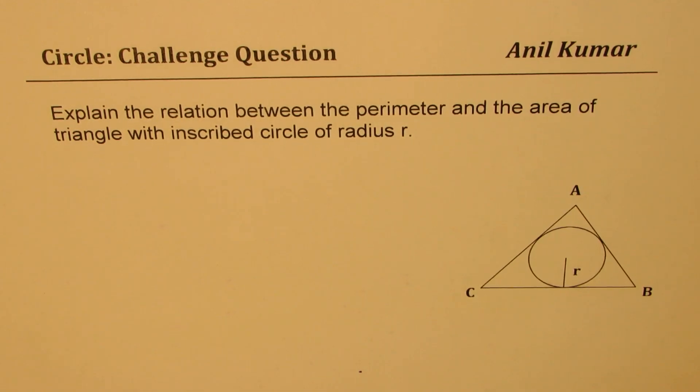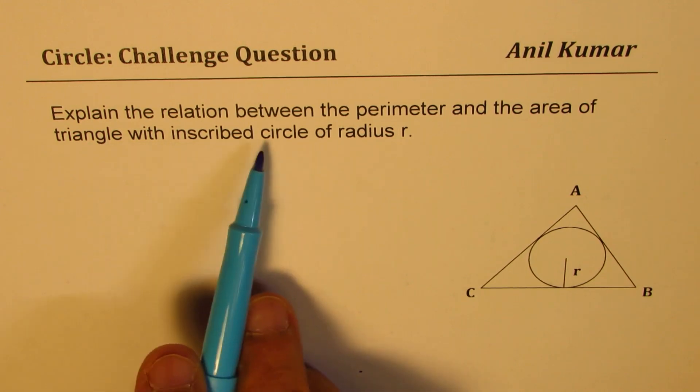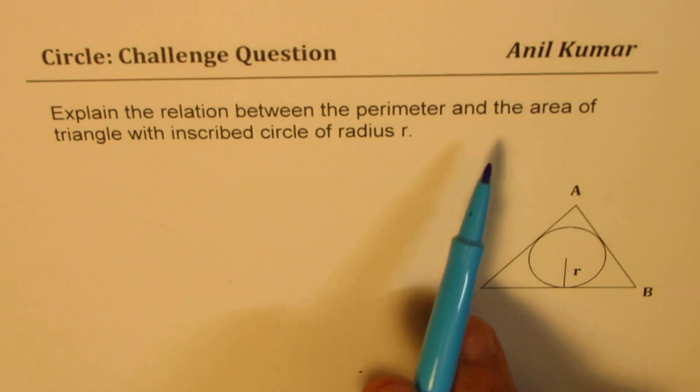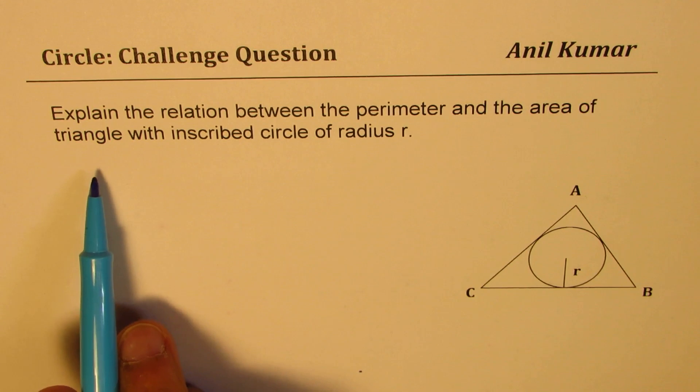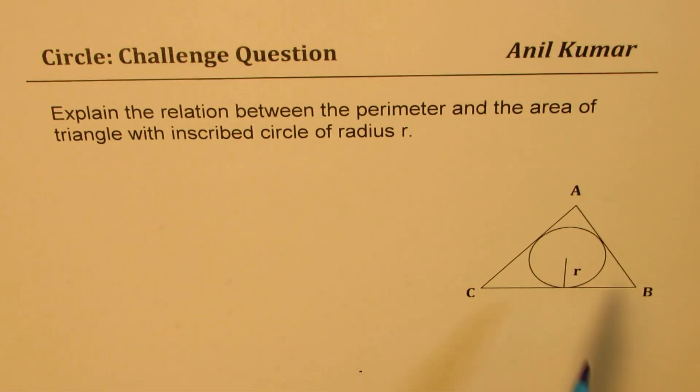I'm Anil Kumar. Welcome to my series on circle. Today we'll discuss a few important questions based on circle. The question here is, explain the relation between the perimeter and the area of a triangle with inscribed circle of radius R.